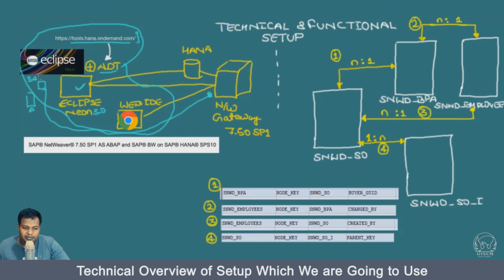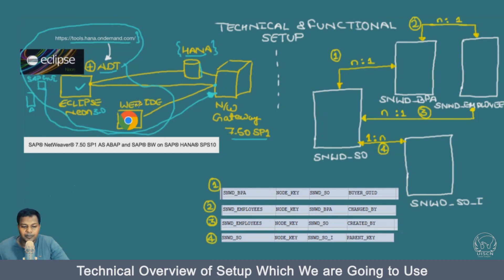We have SAP GUI front-end and this GUI will also be connected to your gateway. The NetWeaver gateway is 7.5 Service Pack 1, and the database this time is HANA. Previously when we were working with the Fiori for developer course, the database was Sybase. In this case it is SAP HANA Service Pack S10. The HANA is connected to our Eclipse with our ADT tools. The Eclipse is also connected to the gateway system, and the SAP system will also be connected to Web IDE.